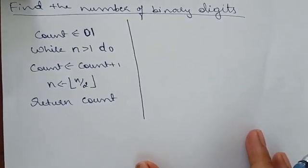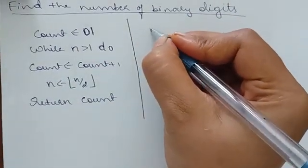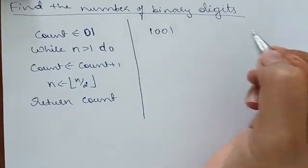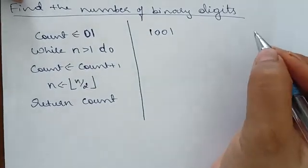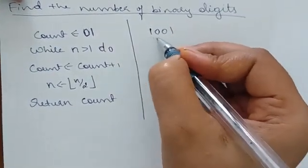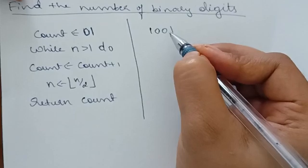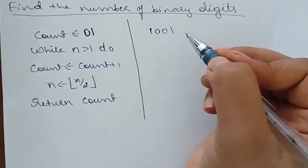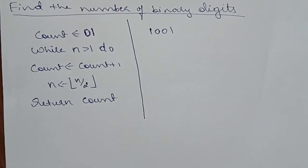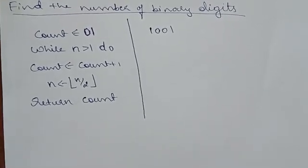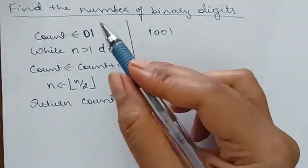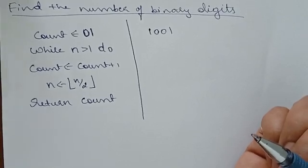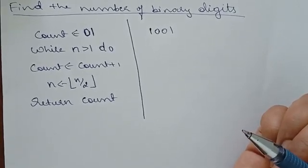This algorithm finds the number of binary digits. Binary digits are zeros and ones — any number represented in binary. This algorithm counts how many binary digits a number has. For a small number you can count visually, but for very large numbers with hundreds of zeros and ones, you need an algorithm. I'll first explain how it works, then show the mathematical analysis.